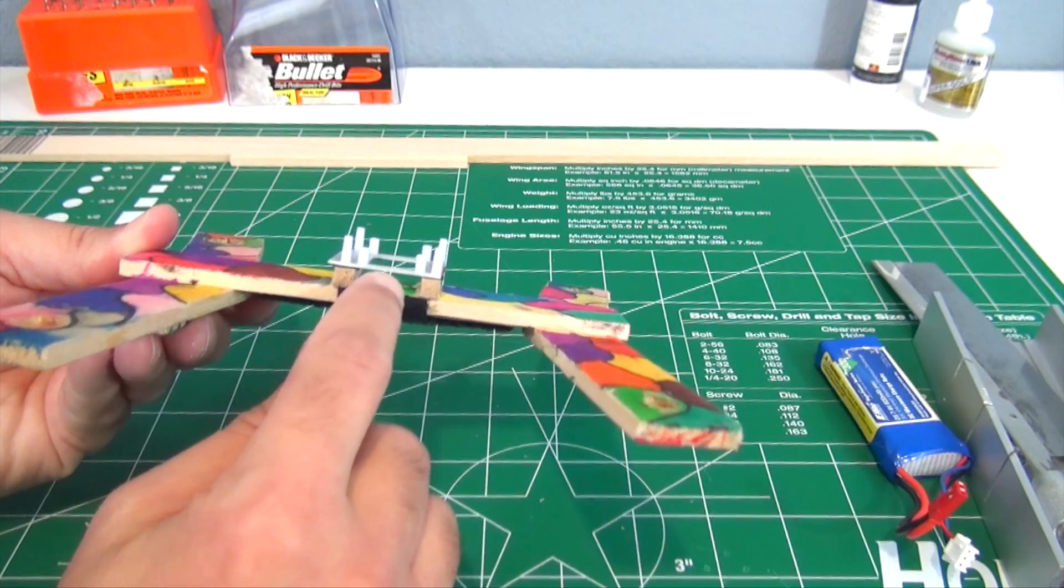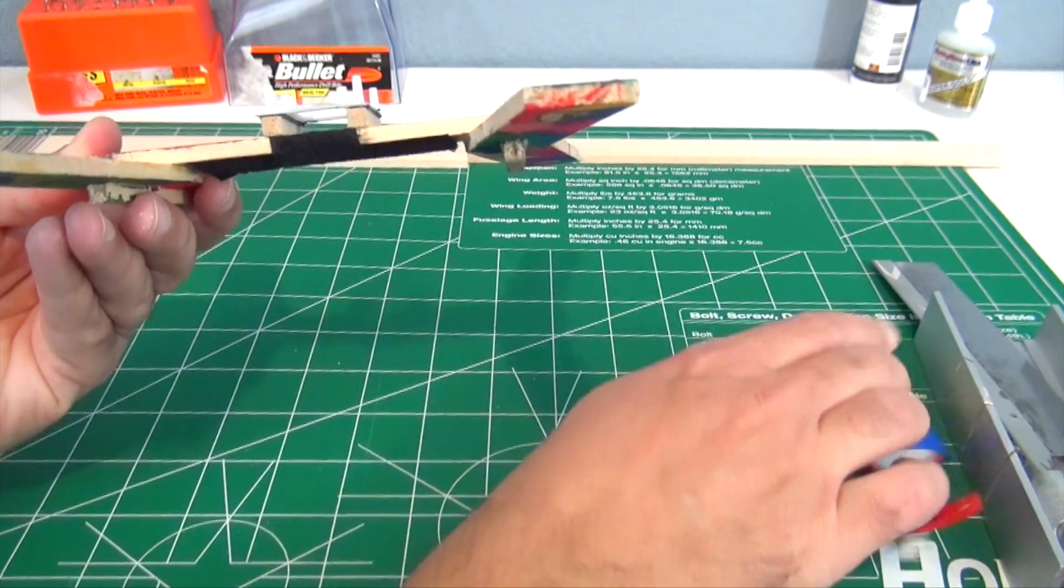And the velcro strap to hold the battery runs through here. You have a little hook and loop velcro that can go right through there and hold the battery in place, you're not just hanging on just with one velcro strip like that.